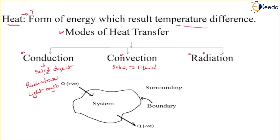The third mode is radiation. Radiation depends on electromagnetic rays — heat transfer occurs through electromagnetic waves between two bodies separated by empty space or gases. A microwave oven is an example of radiation, where microwaves transfer heat to cook or heat food. X-ray machines are also a perfect example of radiation.